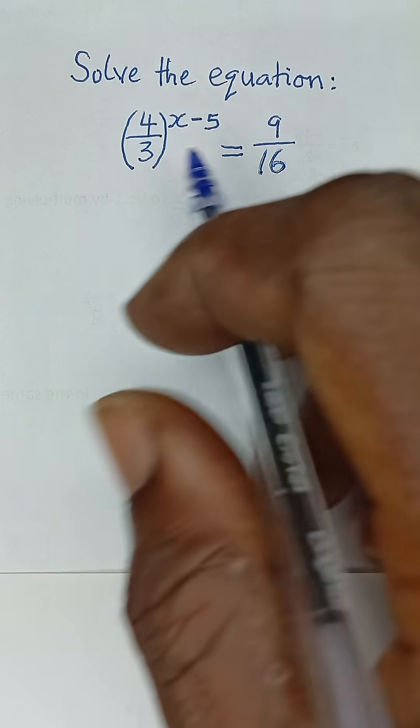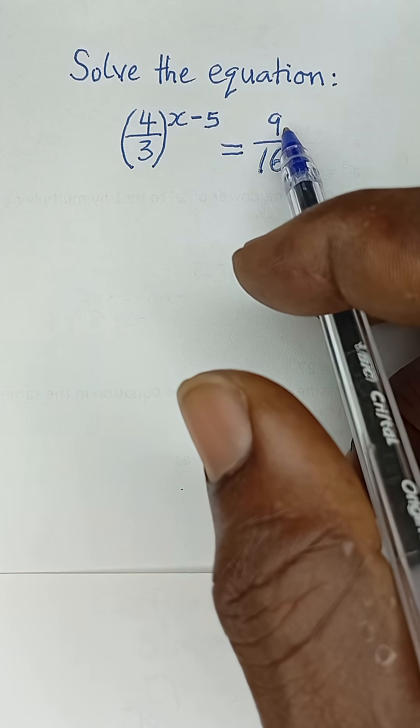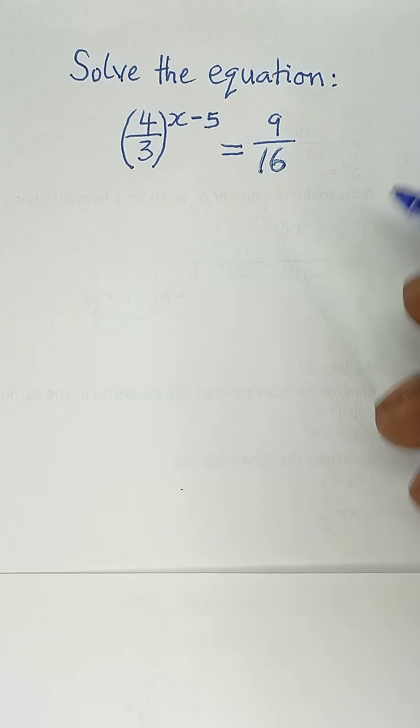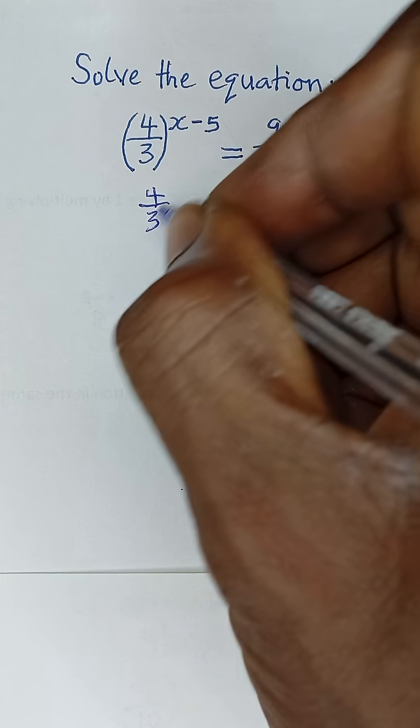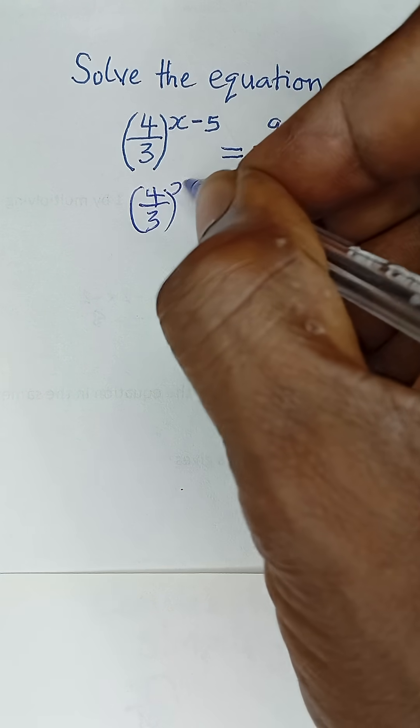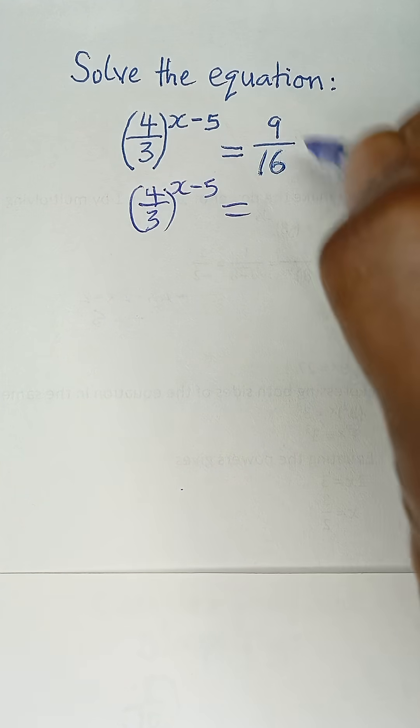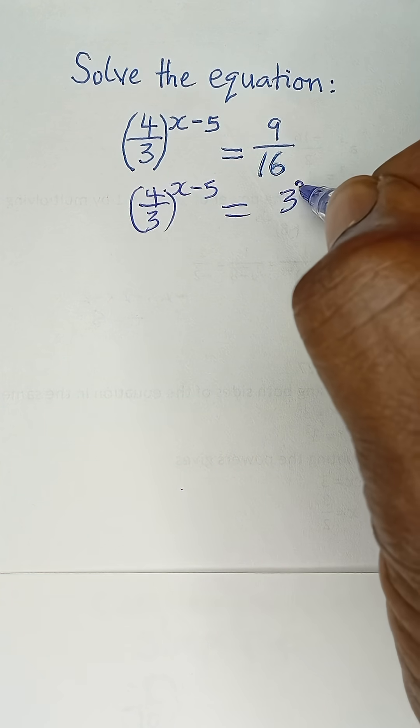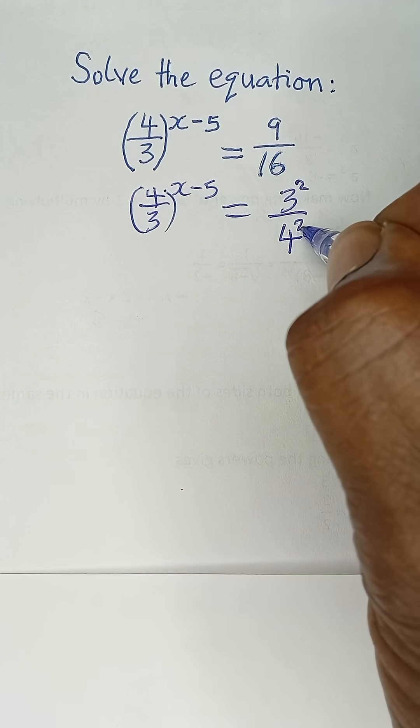Solve the equation: 4 over 3 raised to the power x minus 5 is equal to 9 over 16. Now, we can express this as 4 over 3 raised to the power x minus 5 is equal to 9 over 16, where 9 is just 3 squared, all over 16, which is 4 squared.